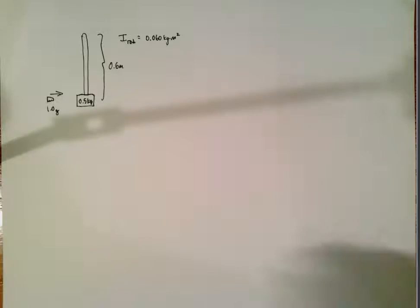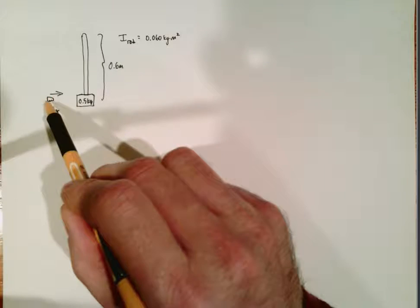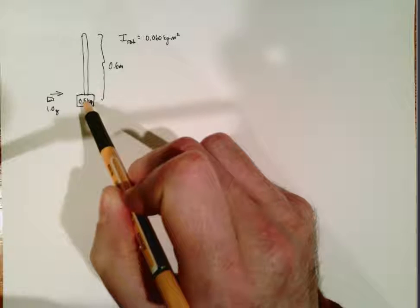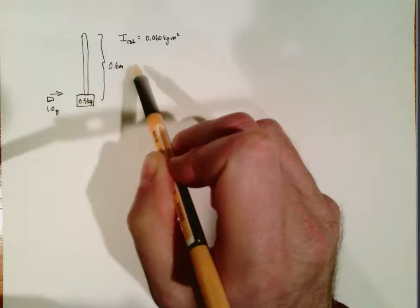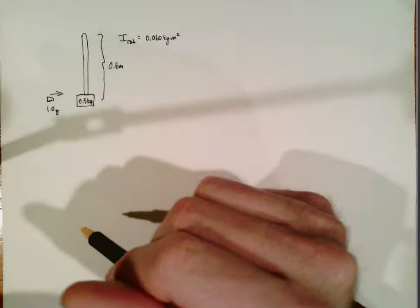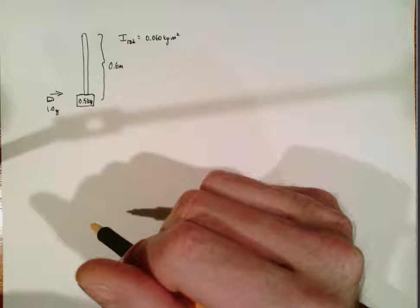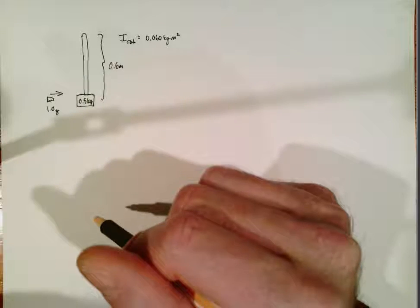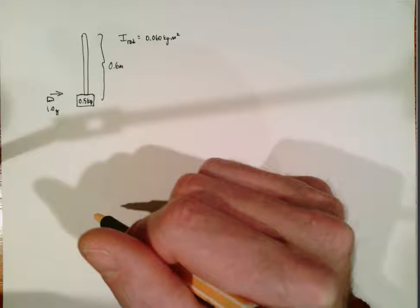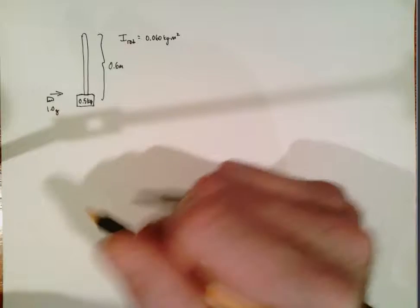All right, this problem presents us with a situation where we have a collision, a bullet running into a block, and then we have rotation after that. Anytime you see a collision you should think law of conservation of momentum, and since we have rotation here this is going to involve the law of conservation of angular momentum.